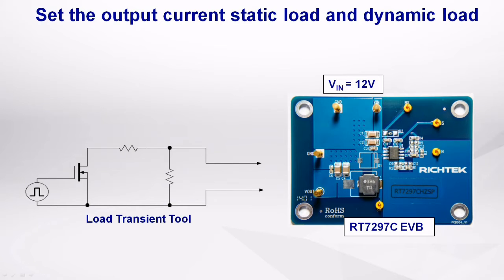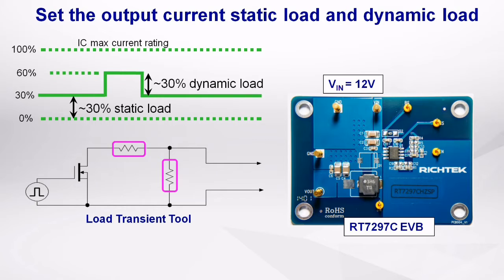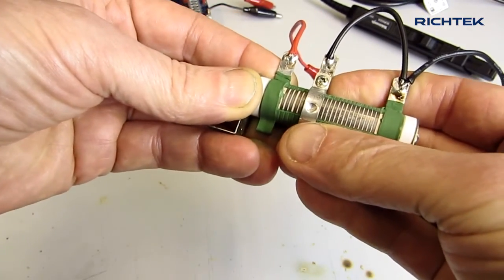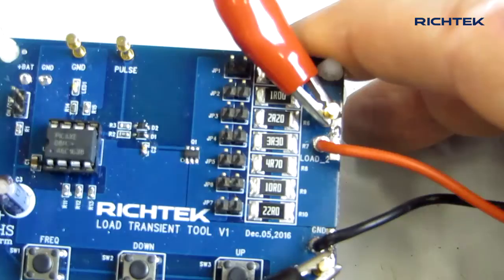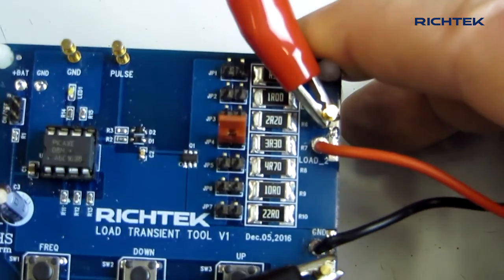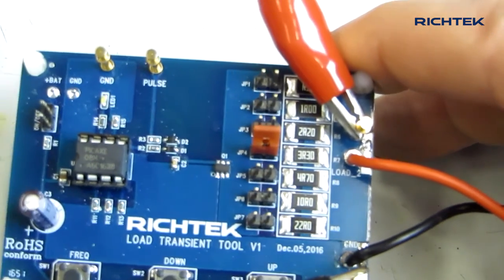For the Load Transient Stability Test, we first need to select the static load and pulse load amplitude of the load generator. I normally set around 30% static load and 30% dynamic load, which keeps the regulator in continuous conduction mode. So for a 3.3V 3A supply, you would select around 3.6 ohm static load and 3.6 ohm dynamic load. First adjust the 3.6 ohm static load via the adjustable power resistor, and then select the 3.3 ohm pulse load resistor via a jumper on the Load Transient Tool.